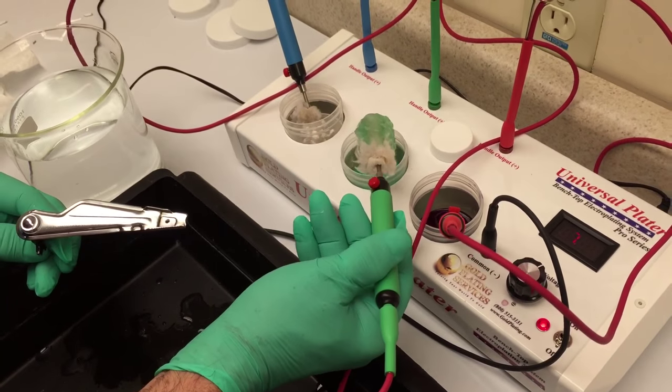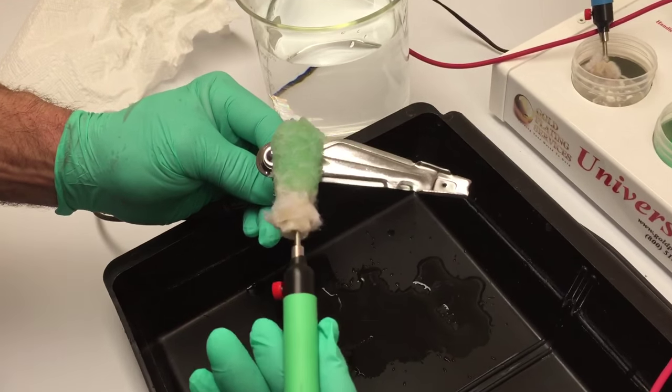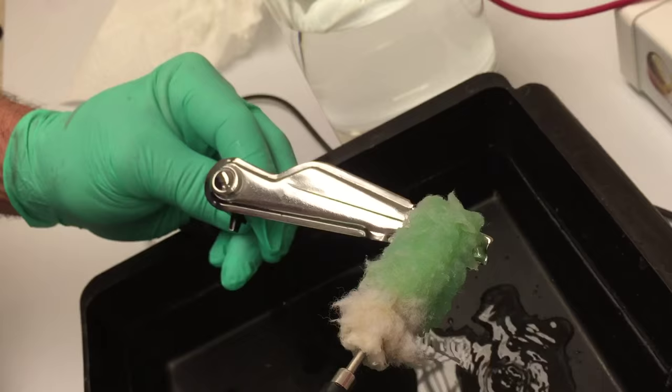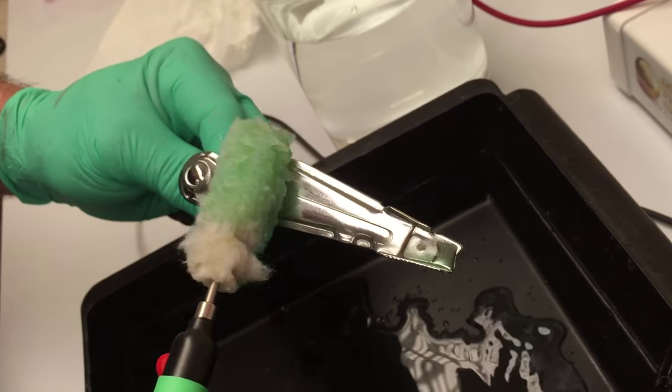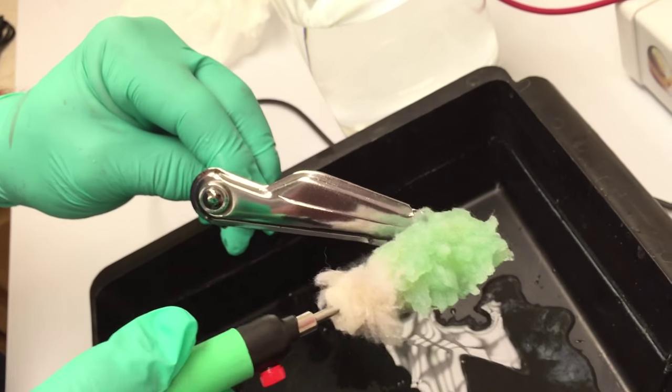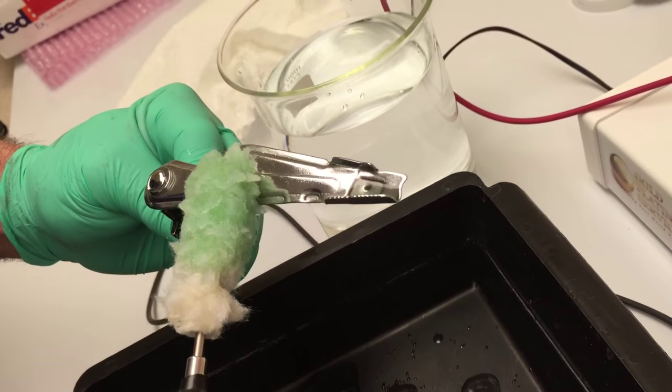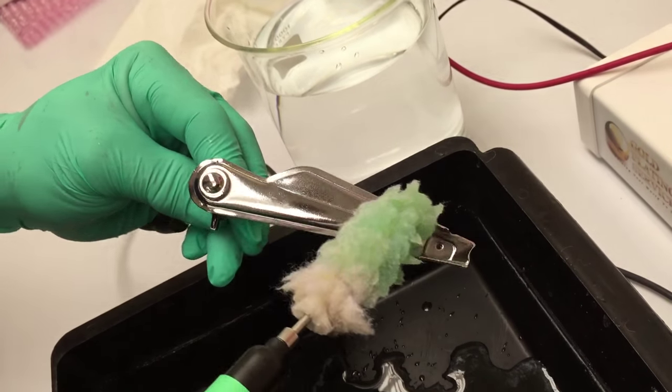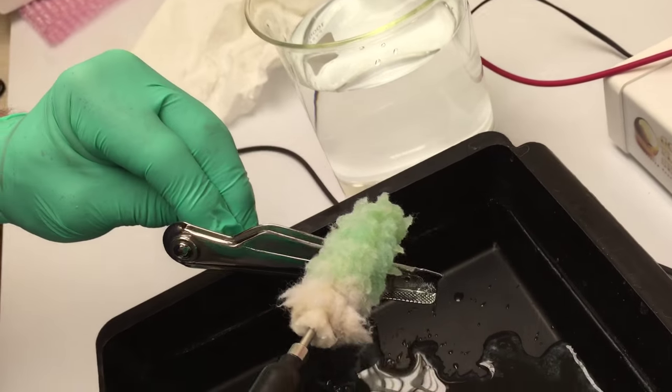Now for this, this is the activator, and it really doesn't do anything that you can see. It's just activating the surface, making it so that the gold will adhere. Again, I'm just going to go over it fairly quickly, spending maybe on this part 15 to 30 seconds, something like that. I just want to make sure I get everywhere at least once.